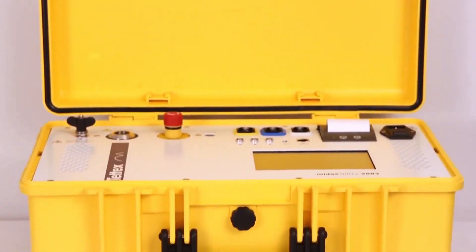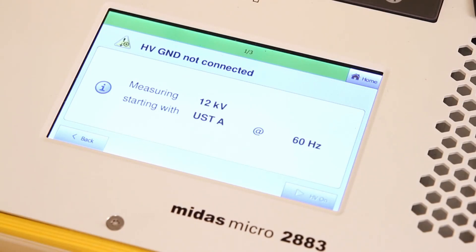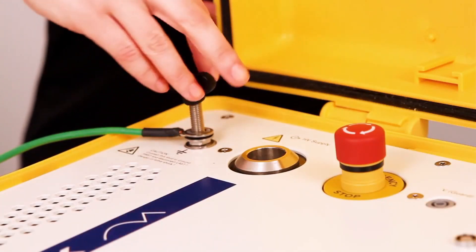The MIDAS MICRO is equipped with a high voltage and ground connection sensor, which allows high voltage to be switched on only when a proper ground connection has been made to the unit.